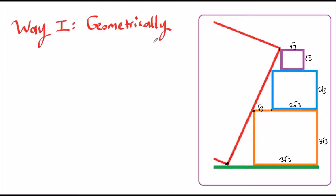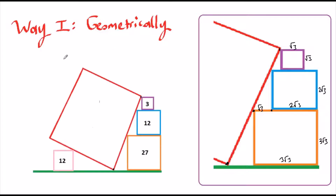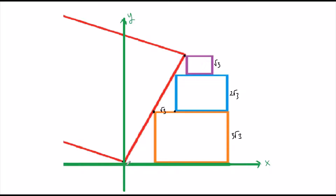Now we are going to apply Euclidean geometry and analytic geometry. Let's set our shape on the 2D xy-plane and zoom in on the relevant part. We'll make one vertex of the red square our origin. If we extend the side of the red square, this is a linear line, and we know the equation of a line: L = mx + b.